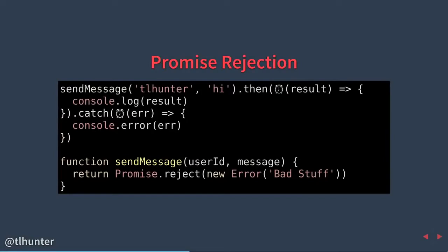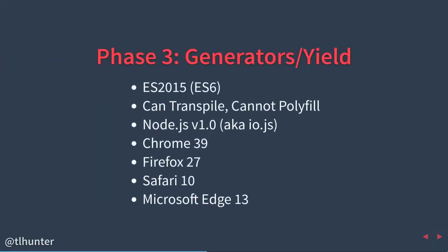With promises we don't call them exceptions — we call them rejections. Within a promise, you can return a rejected promise using Promise.reject, passing the reason for the rejection — in this case an error object. Once our sendMessage is called, we do a dot-then to chain the result of that operation. However, our then is not called; instead the catch operation is called, giving our catch the result of that error.